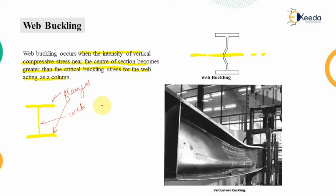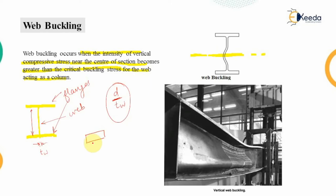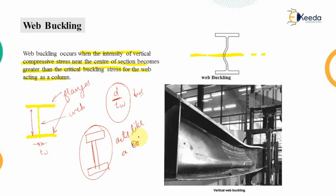For rolled steel sections, the D/Tw ratio — that is the depth of the web divided by the thickness of the web — is within the permissible limit. But in built-up sections, where we use plain plates with higher depth and lesser thickness, this D/Tw ratio increases significantly, and the vertical member acts like a column, causing it to tend to buckle like a column.